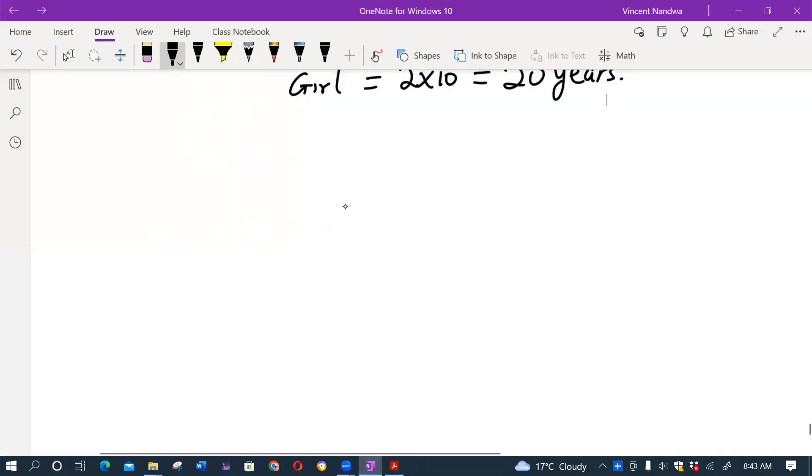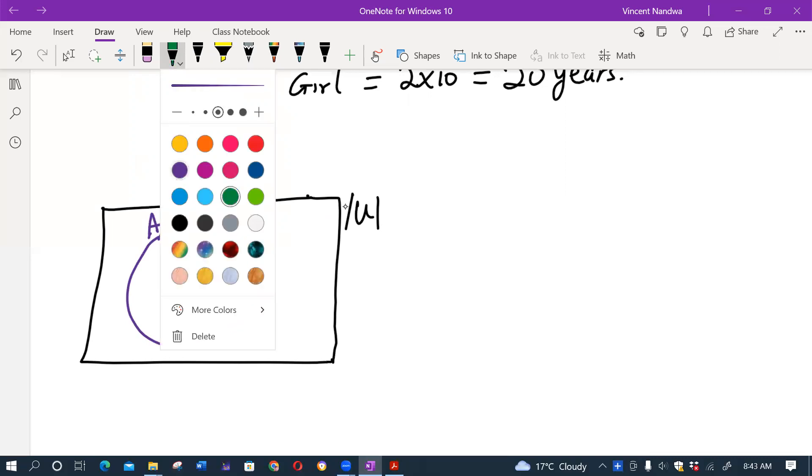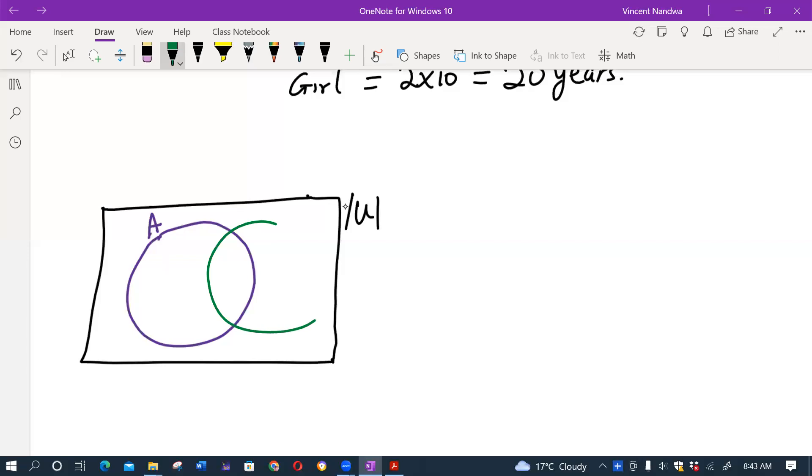So here there are only two sets. If this is our universal set U, then let this be set A and let this be set B. Now we have been told that cardinality of A minus B is given by 32 plus x. In this diagram, this is where you have A minus B, so this will be 32 plus x.